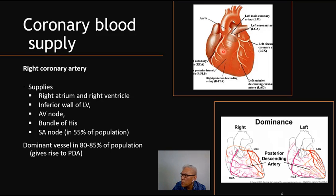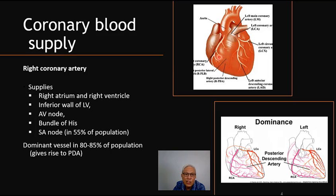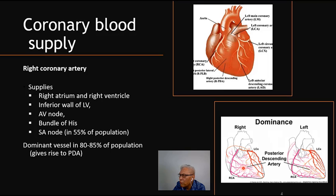The right coronary artery is responsible for the blood supply of the right atrium and right ventricle, as well as the inferior portion of the left ventricle. It gives rise to the posterior descending coronary artery (PDA).